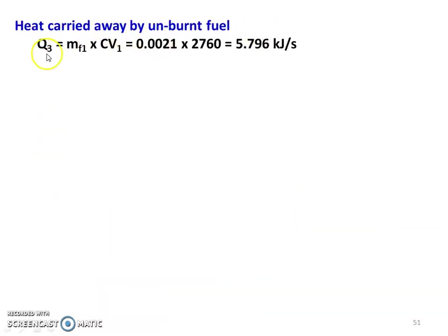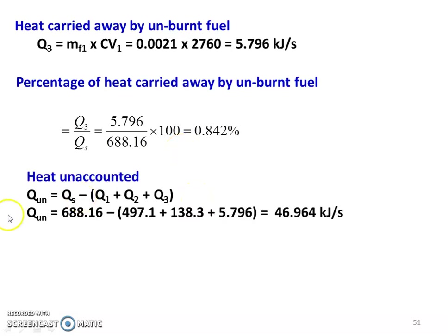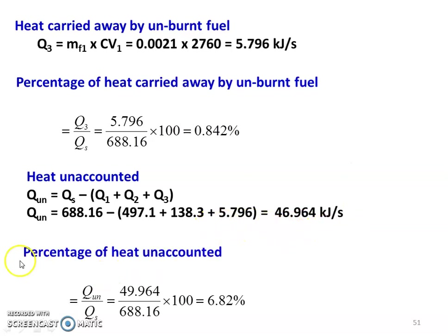Heat carried away by unburnt fuel: Q_3 = M_f1 × calorific value of unburnt fuel = 0.0021 × 2760 = 5.796 kJ/s. Percentage of heat carried away by unburnt fuel = Q_3 / Q_s × 100 = 5.796 divided by 688.16 × 100 = 0.842%. Heat unaccounted = heat supplied minus (Q_1 + Q_2 + Q_3) = 688.16 minus (497.1 + 138.3 + 5.796) = 46.964 kJ/s. Percentage of heat unaccounted = 46.964 divided by 688.16 × 100 = 6.82%.